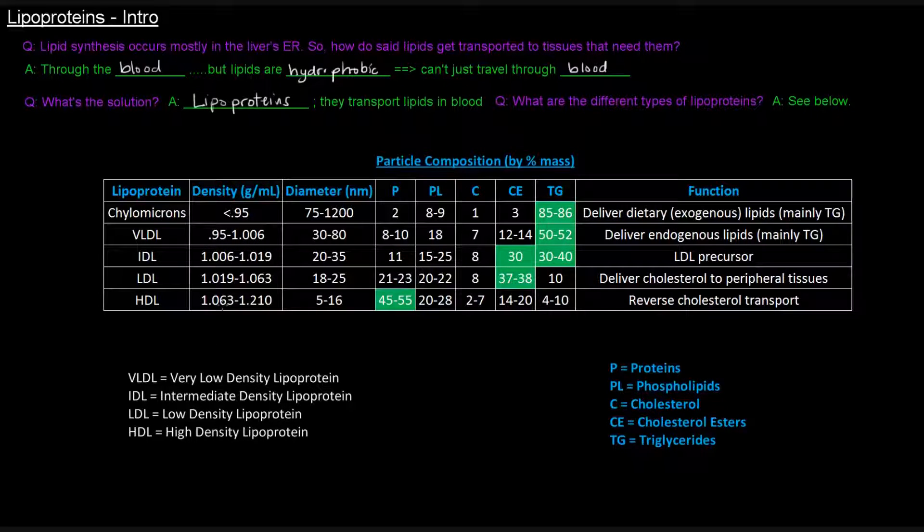We see the density and diameter here. Density is increasing going upwards this way, and diameter is decreasing going downwards. So chylomicrons are the biggest and least dense, and HDL are the smallest and most dense of the lipoproteins.